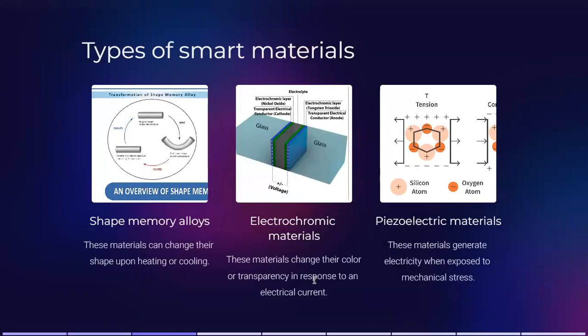The types of smart materials include shape memory alloys, electrochromic materials, and piezoelectric materials. Shape memory alloys are materials that can return to their original shape upon heating or cooling — these are called shape memory alloys.